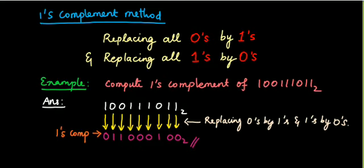One's complement means replacing all the zeros by ones and ones by zeros. One's and two's complements are used for binary values.